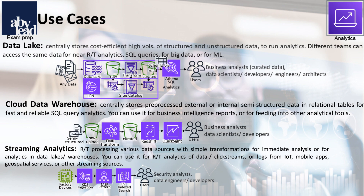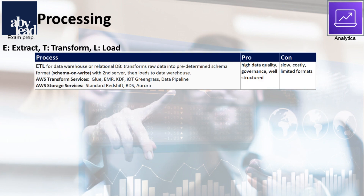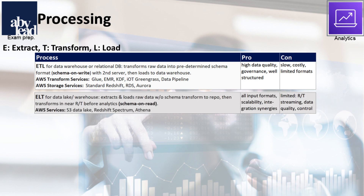For your analytics or BI you can choose between three data processing approaches with arranged process steps to extract, transform, and load. With ETL you transform the raw data into a format, then load the structured data into a data warehouse — this is called Schema on Write. In contrast, ELT loads the raw data directly into a data lake or streaming analytics and transforms it at a later stage with the Schema on Read method.